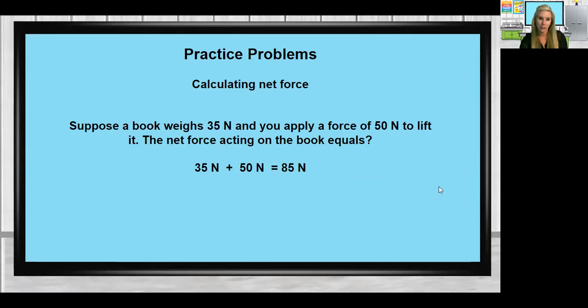Suppose a book weighs 35 Newtons and you apply a force of 50 Newtons to lift it. The net force acting on the book, we're going to add these together, is 35 Newtons plus our 50 Newtons. So the total force acting on the book is 85 Newtons.